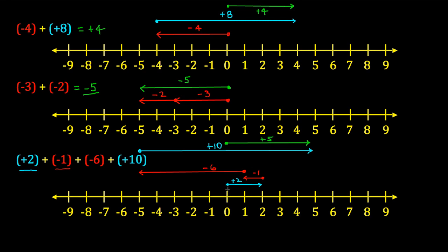So if you moved, if this were a walking path that you performed—you walked two units to the right, then one unit to the left, then six units to the left, then ten units to the right—you could have accomplished the same net result if you had started at zero and just walked five units to the right. So this has a value of positive five.